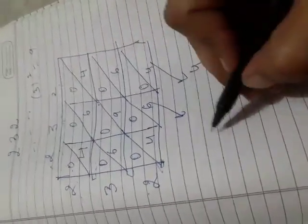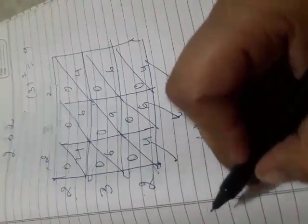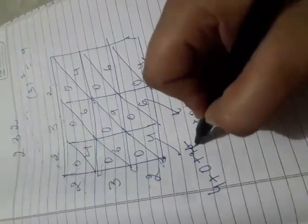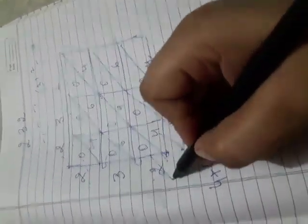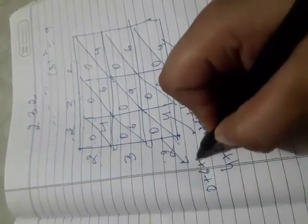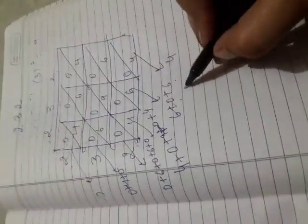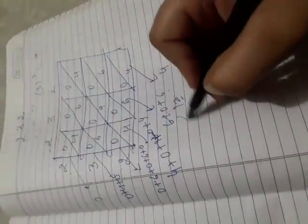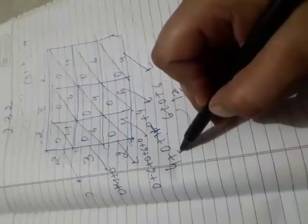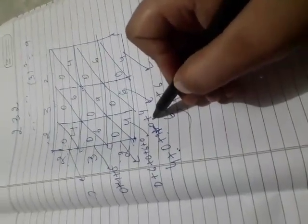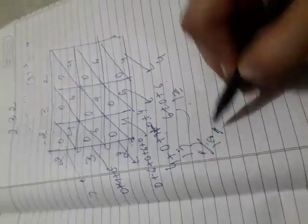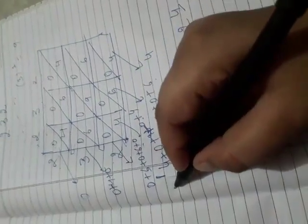Now add the diagonals. Last digit: 4. Next diagonal: 6 + 0 + 6 = 12, write 2 carry 1. Next: 4 + 0 + 9 + 0 + 4 = 17, plus carry 1 = 18, write 8 carry 1. Next: 0 + 6 + 0 + 6 + 0 = 12, plus carry 1 = 13, write 3 carry 1. Next: 0 + 4 + 0 = 4, plus 1 = 5. So the square of 232 is 53824.